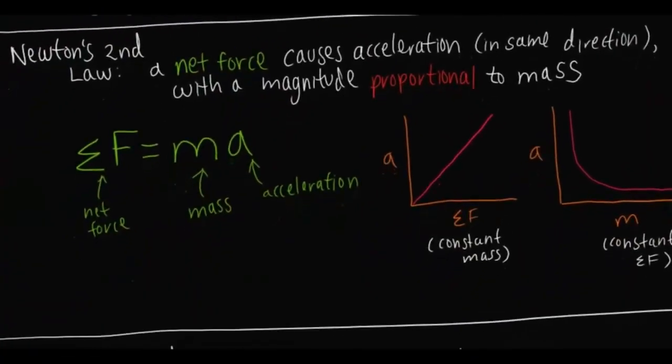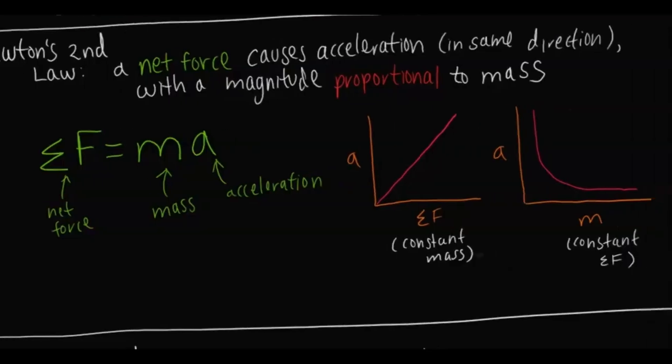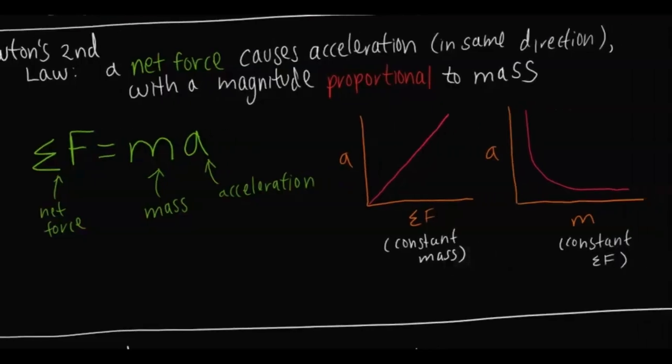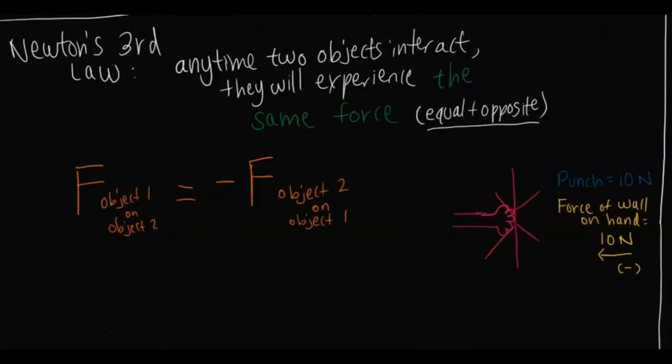Newton's second law is sort of the inverse of Newton's first law — this is where you do have a net force. A net force will cause acceleration in the same direction. The equation is: net force equals mass times acceleration. Whenever net force increases, acceleration also increases in a direct relationship, granted mass is constant. And if mass increases while net force stays the same, then acceleration decreases inversely.